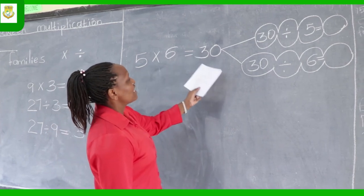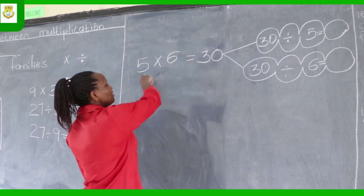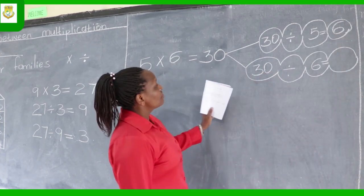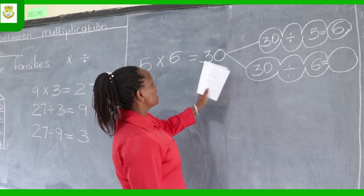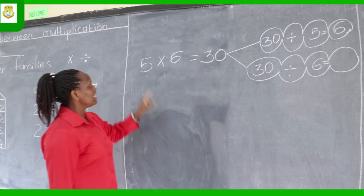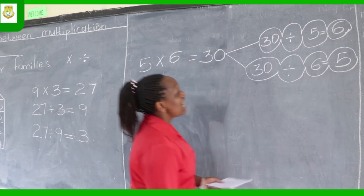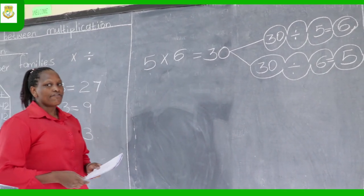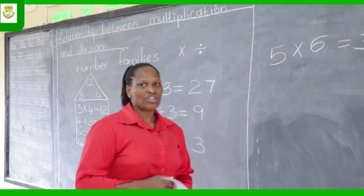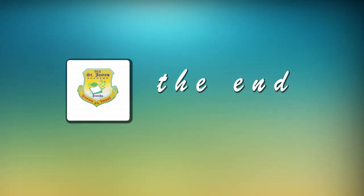So 5 times 6 equals 30. It's correct to say 30 divided by 5 equals 6 — that is the missing number of that family. And here you write 6. It's also correct to say 30 divided by 6 equals: you have 30, one member of the family, and 6, the other member. The missing member is 5, therefore the answer is 5. That brings us to the end of our lesson on the relationship between multiplication and division, also known as number families. Thank you.